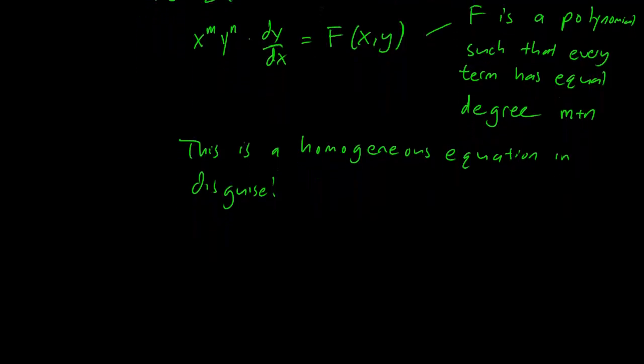So here's an example. If we have y³ dy/dx equals x³ plus y²x minus 2xy².